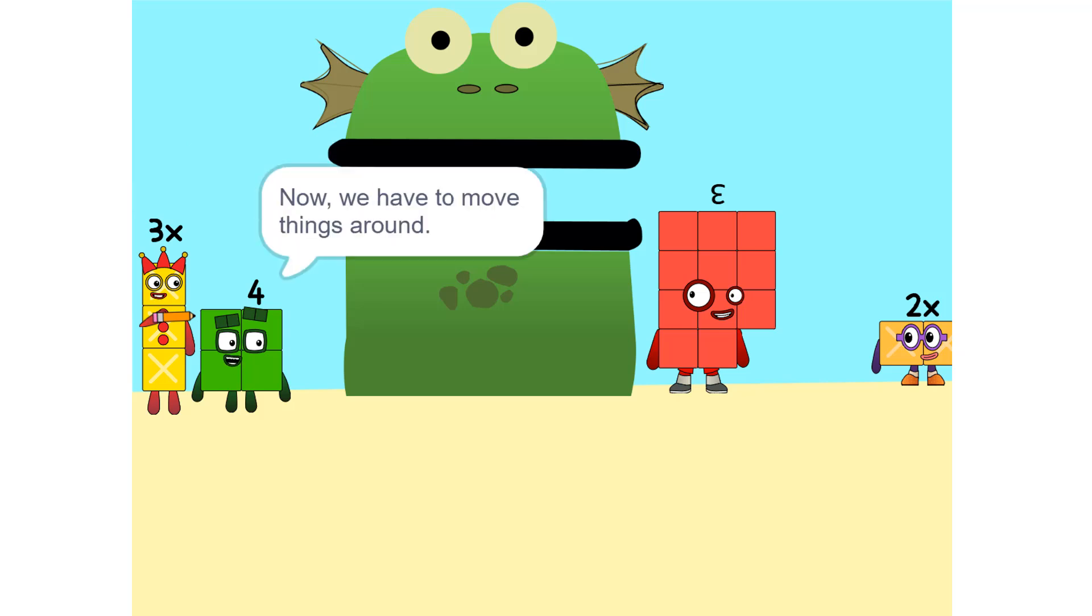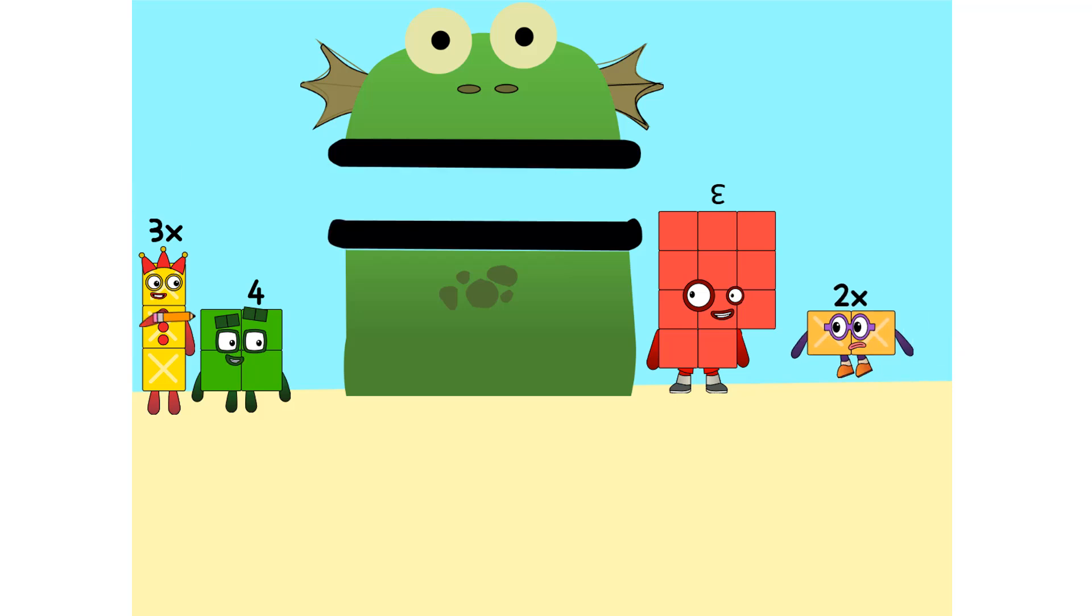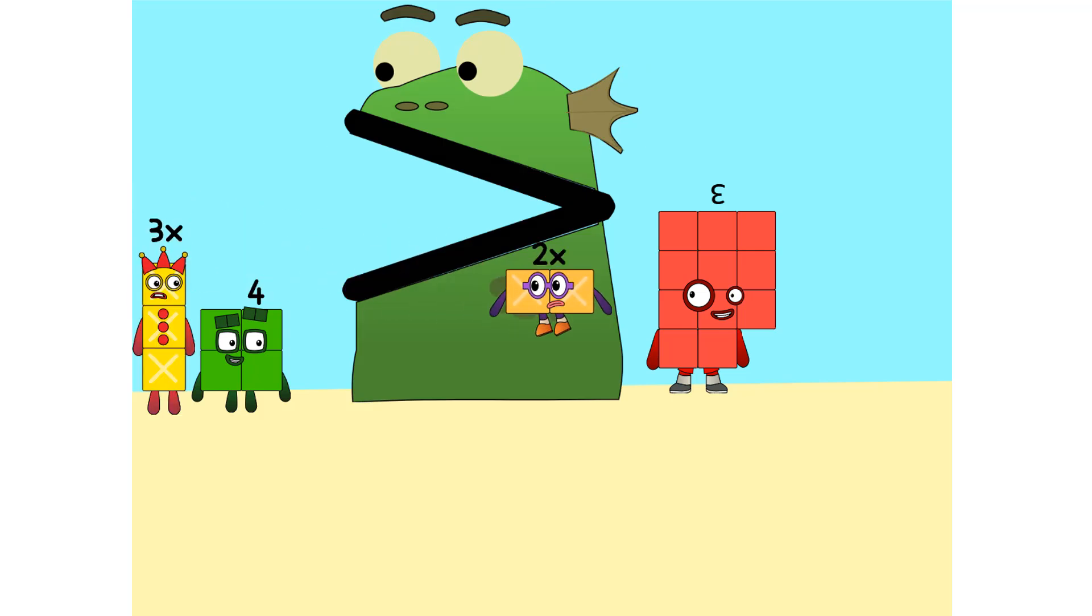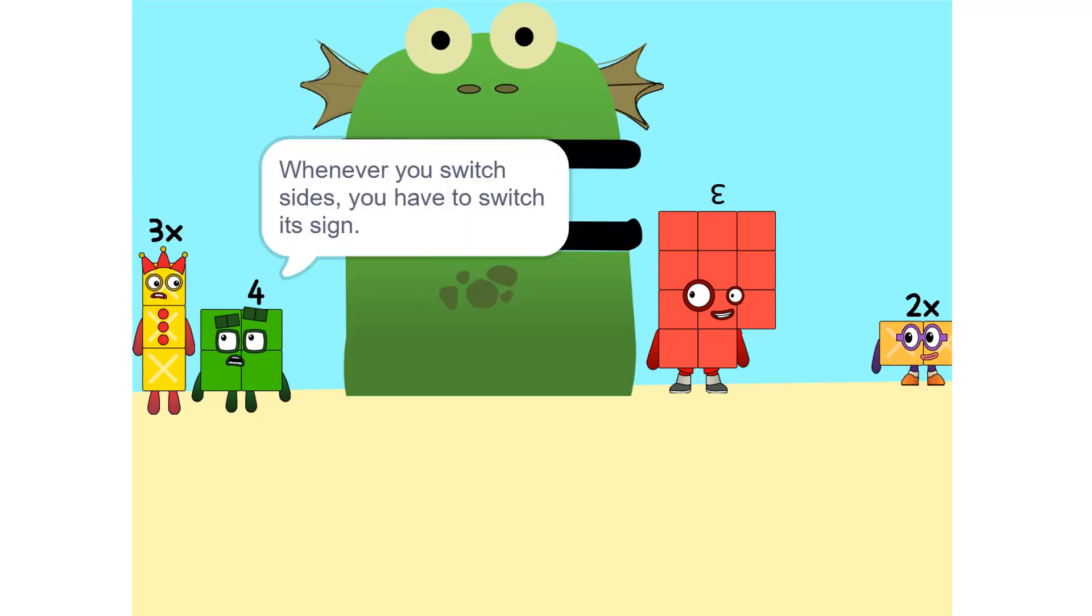Now we have to move things around. We have to move this 2X to this side. So 5X? Ah. Whenever you switch sides, you have to switch its sign. So if it's positive, it becomes negative and vice versa.